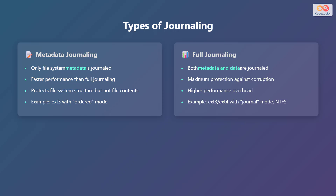On the other hand, full journaling involves journaling both metadata and the actual data. This provides maximum protection against corruption as every change is recorded. However, it comes with a higher performance overhead. Examples include ext3 and ext4 with journal mode, as well as the new technology file system, or NTFS.